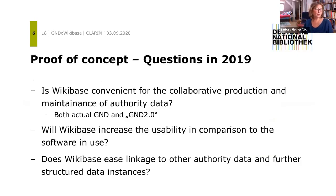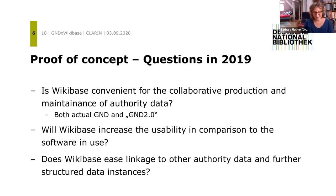Those were the questions we asked ourselves in 2019. We thought: Wikibase promises it is collaborative software like Wikidata, but does it really fulfill those promises? Would it be possible to add our authority data collaboratively? This is not only the question of whether you can easily start to edit an item, but also whether we can manage our access management — we have different roles of people editing our authority file, referring to their level of training, and whether we could reflect that in the Wikibase instance.